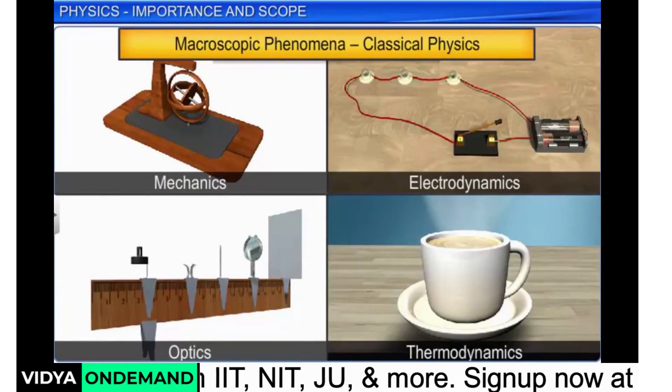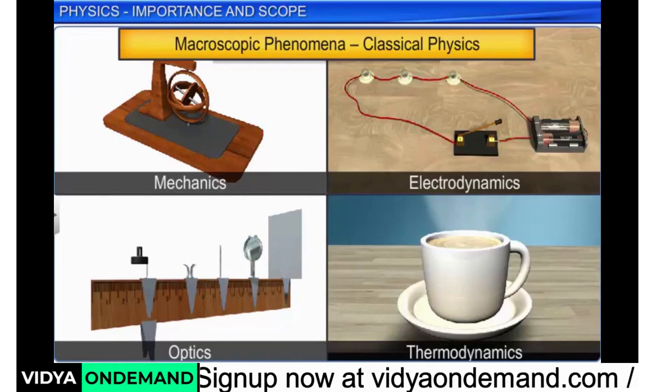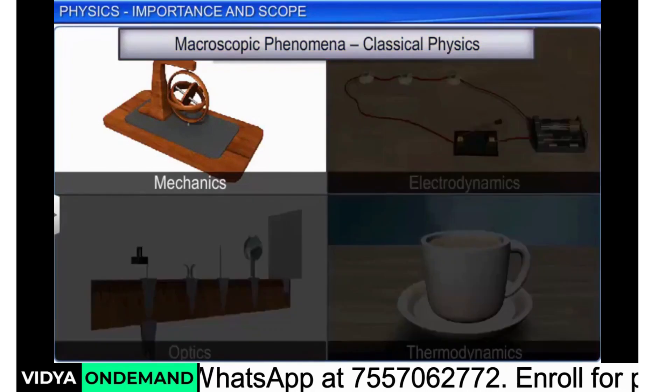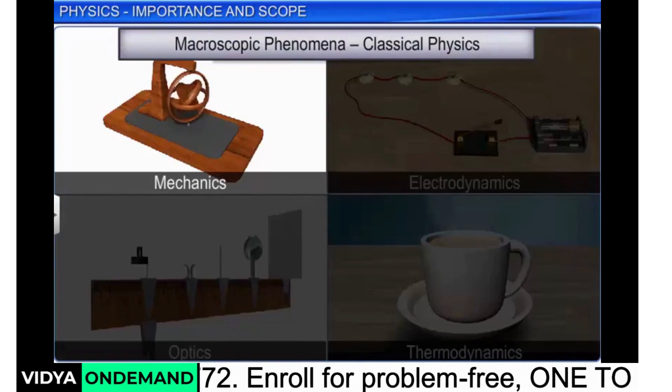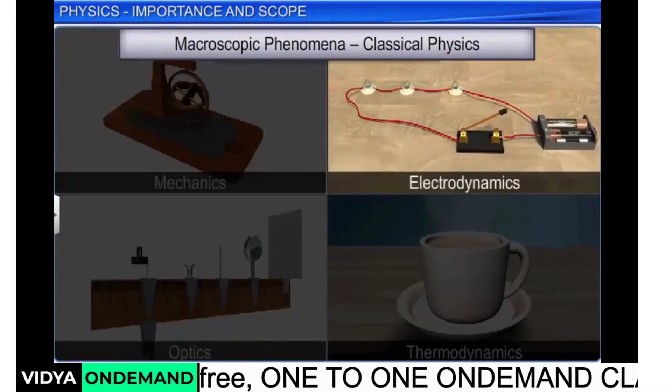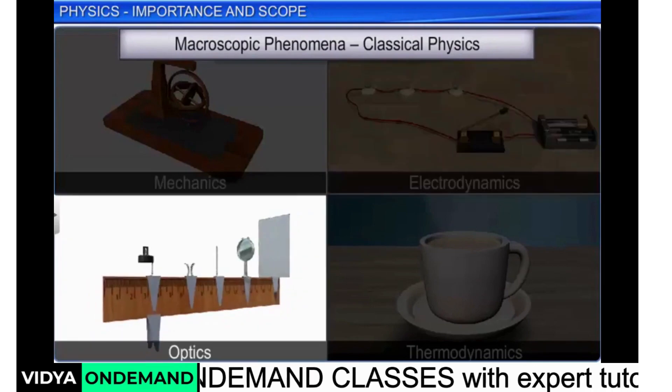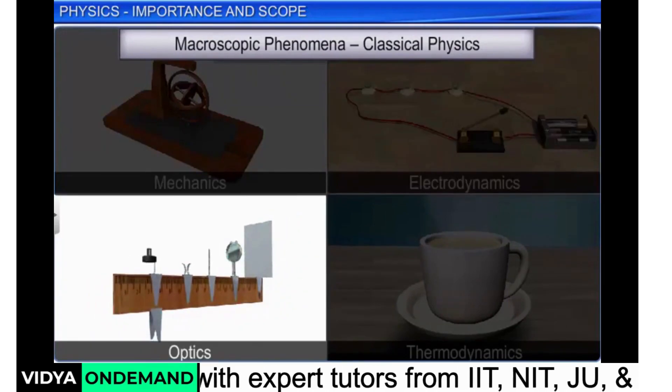In our study of physics, we will look at macroscopic phenomena under classical physics that includes mechanics, electrodynamics, optics and thermodynamics.